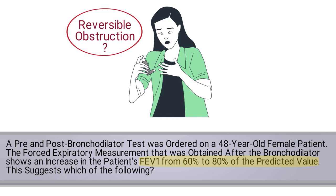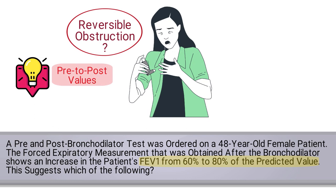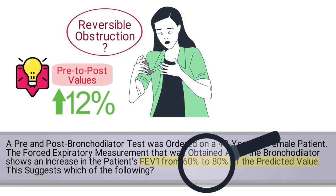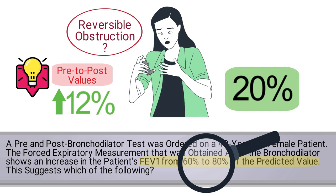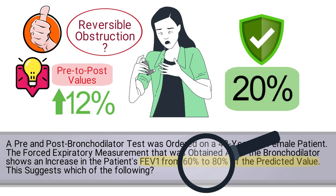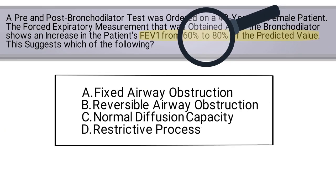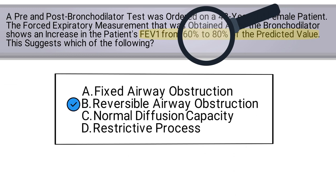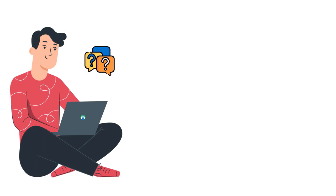Here's what to remember: if the patient's pre to post values increased by at least 12 percent, you know that the treatment was effective. In this case, there was a 20 percent increase, which means the improvement was enough to interpret the patient's condition as a reversible airway obstruction. That tells us the correct answer is B — reversible airway obstruction.